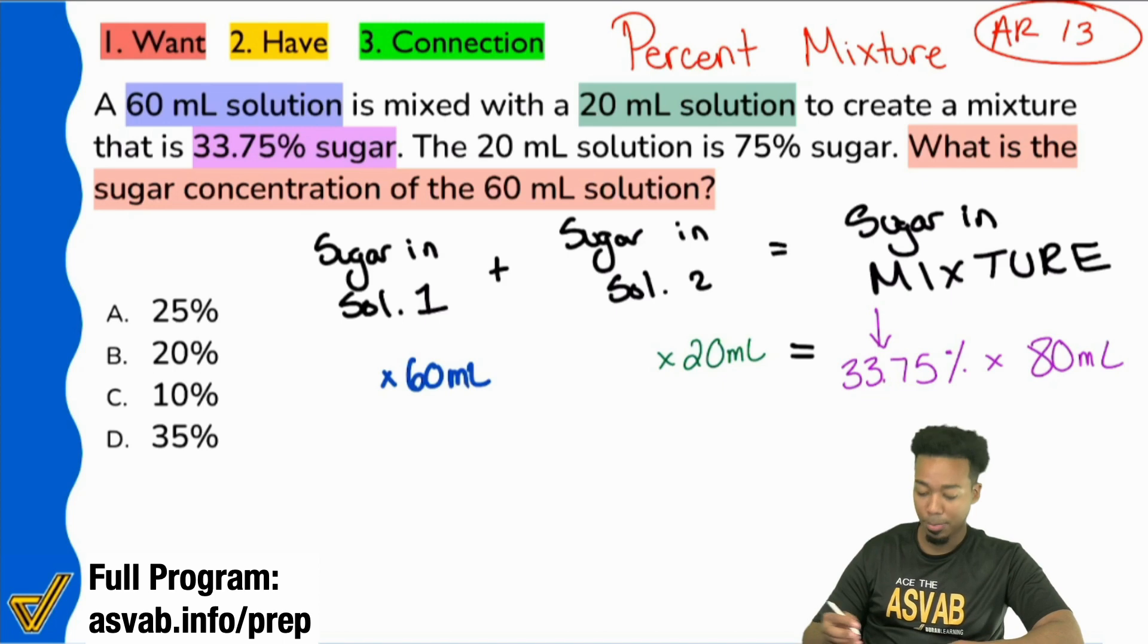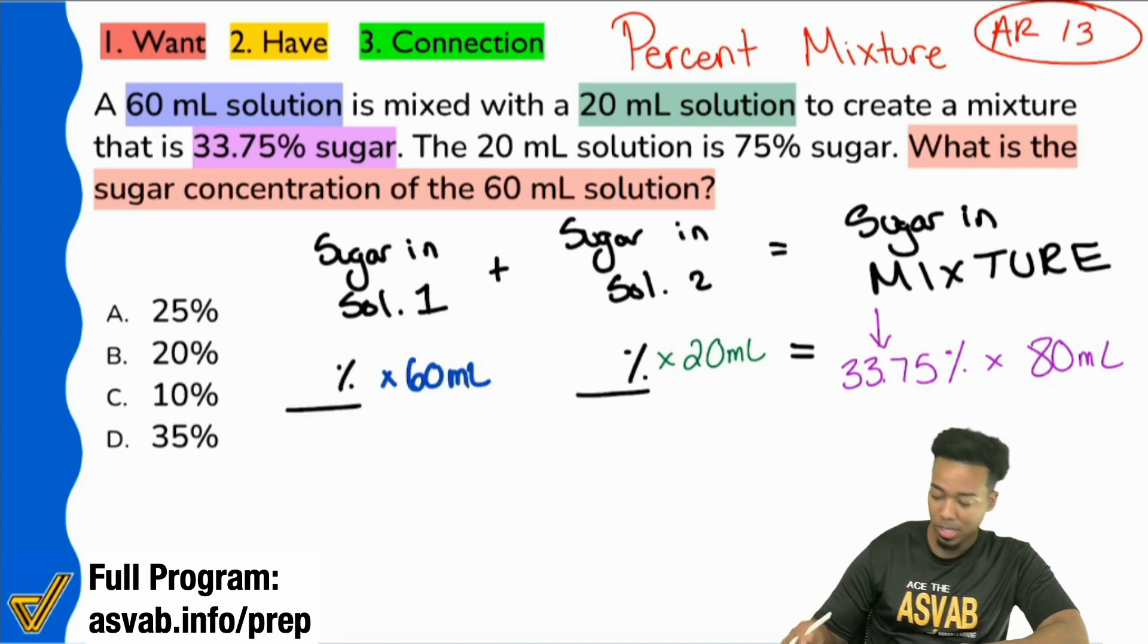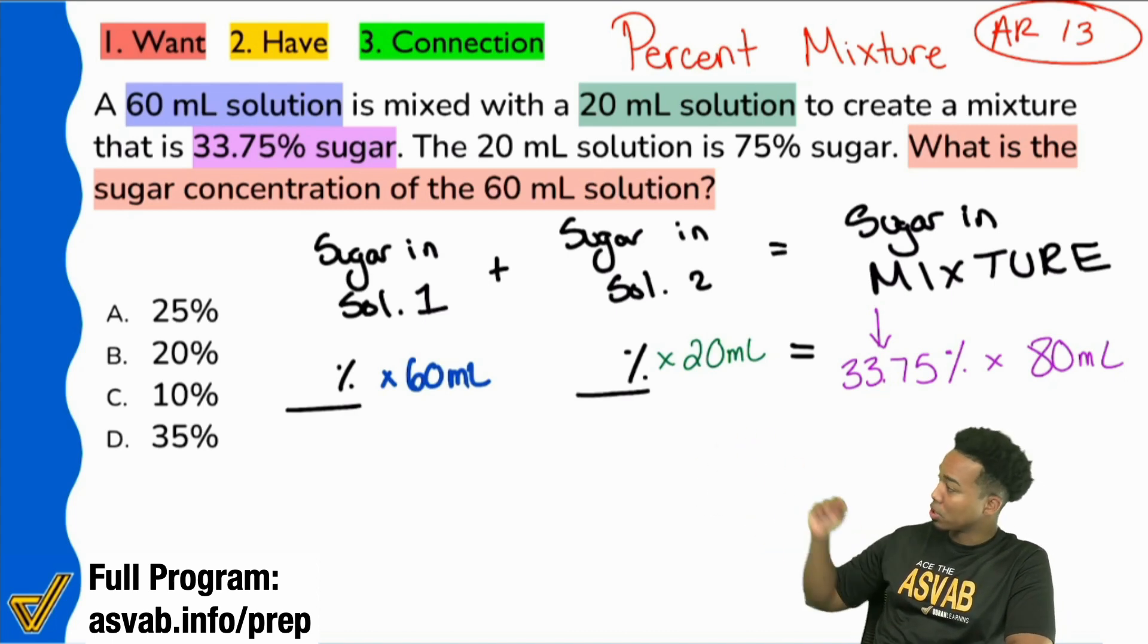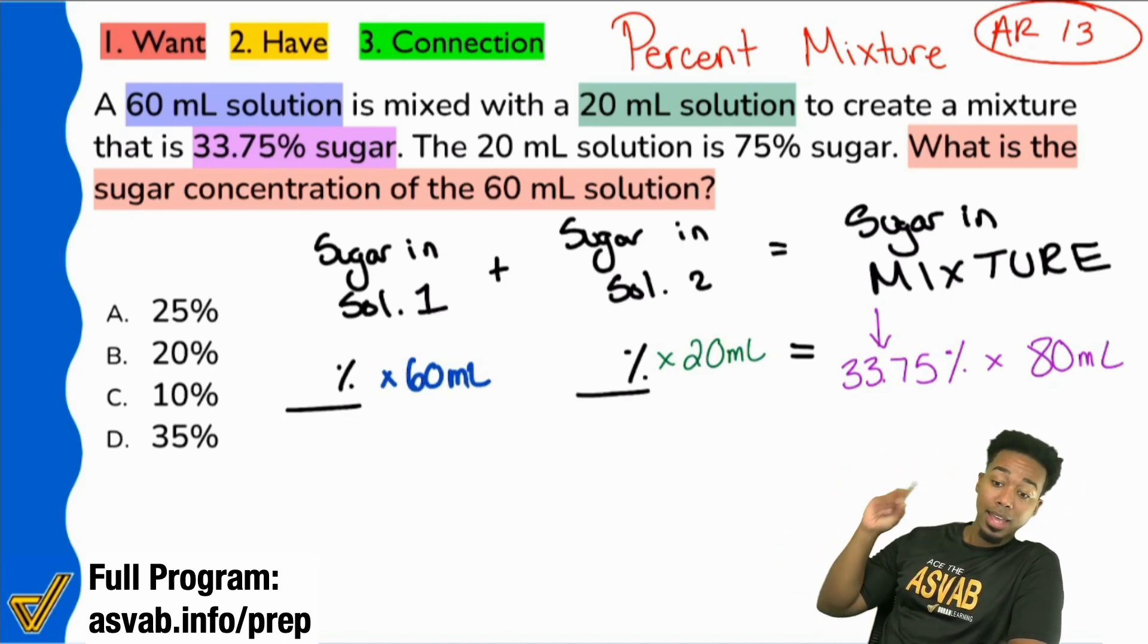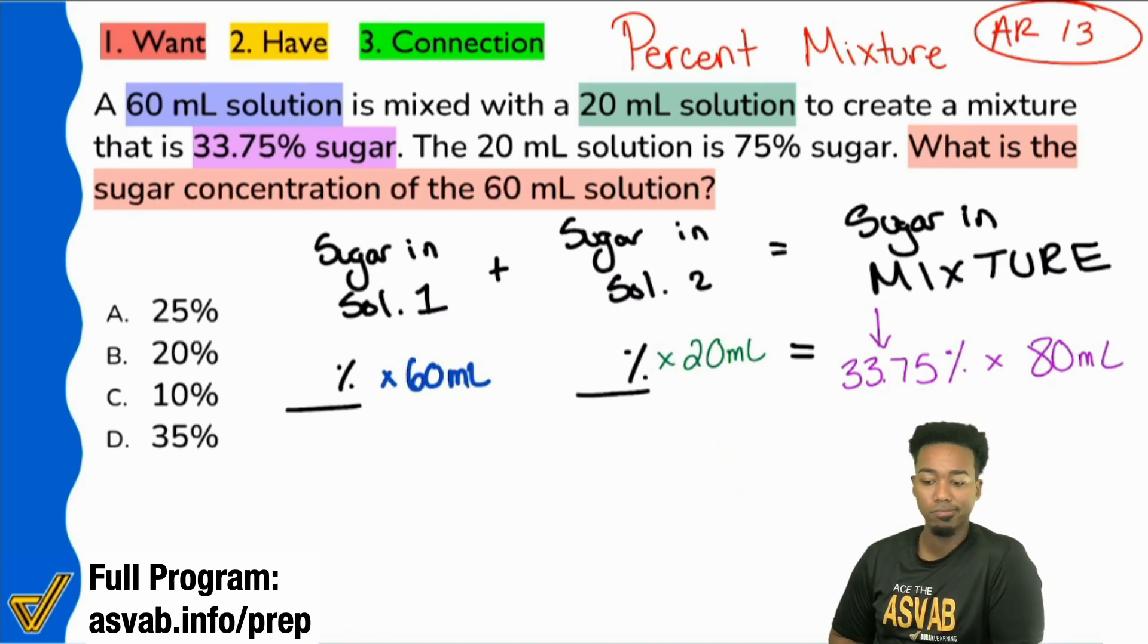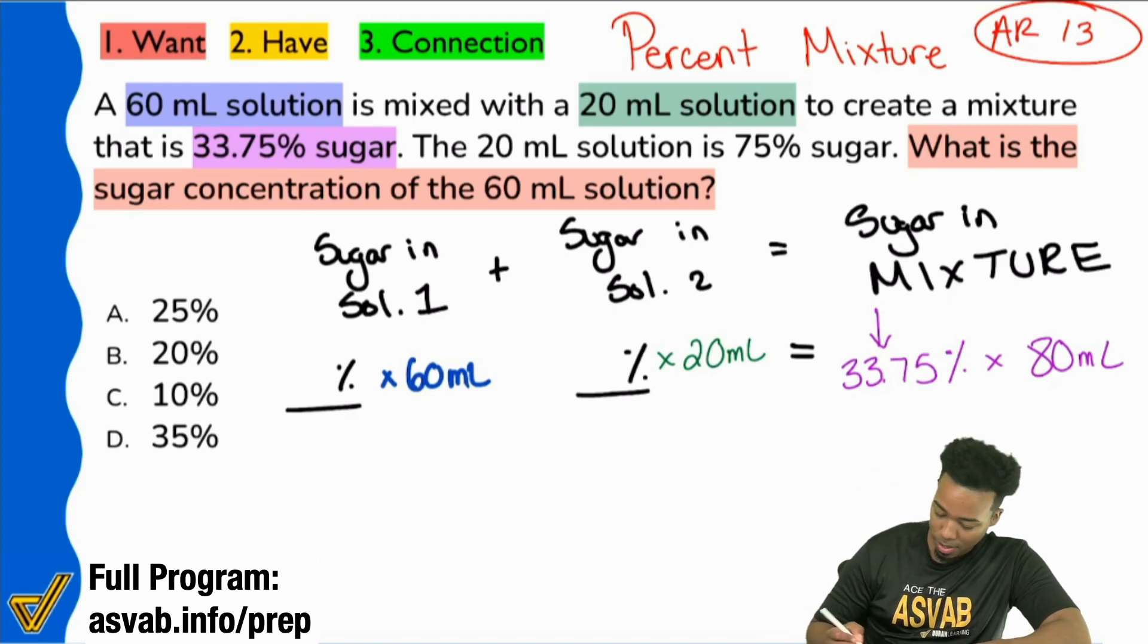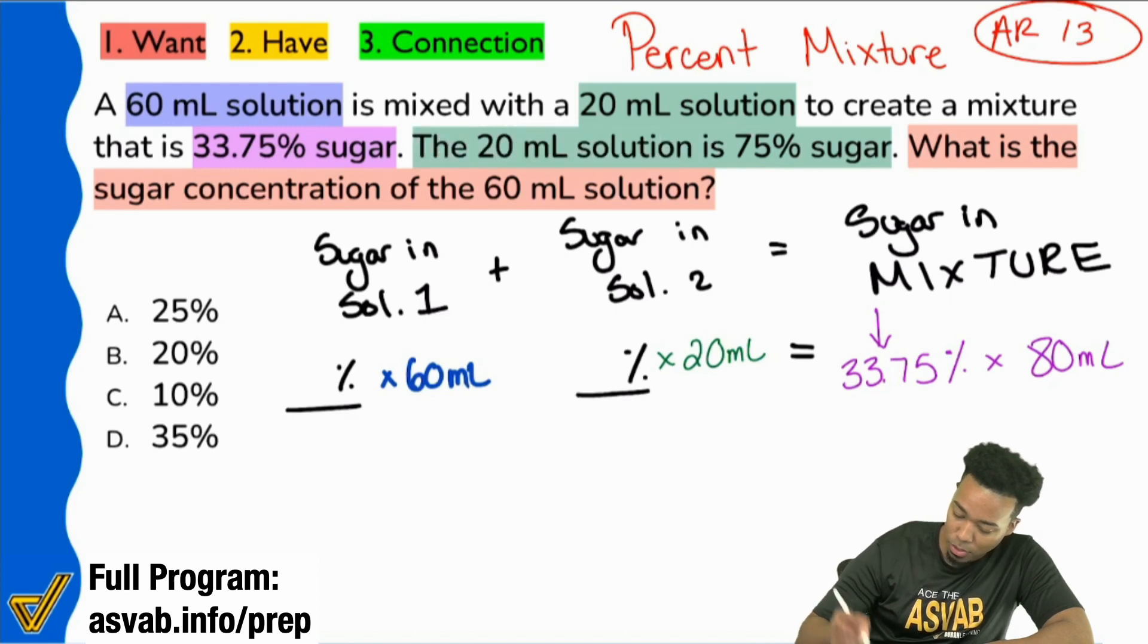Does that make sense? That 33.75 is 33.75% times an amount. That's what we have to make sure we take into account. My party people, what is the amount, what's the total, what's the original for the mixture, for the combined mixture? What's that going to be? And how do you know? Exactly. We have to add them. We're going to add the 60 milliliters from solution one and then we have the 20 milliliters from solution two. That's going to create a total of 80 milliliters for the mixture. So let's go ahead and fill in the gaps here.